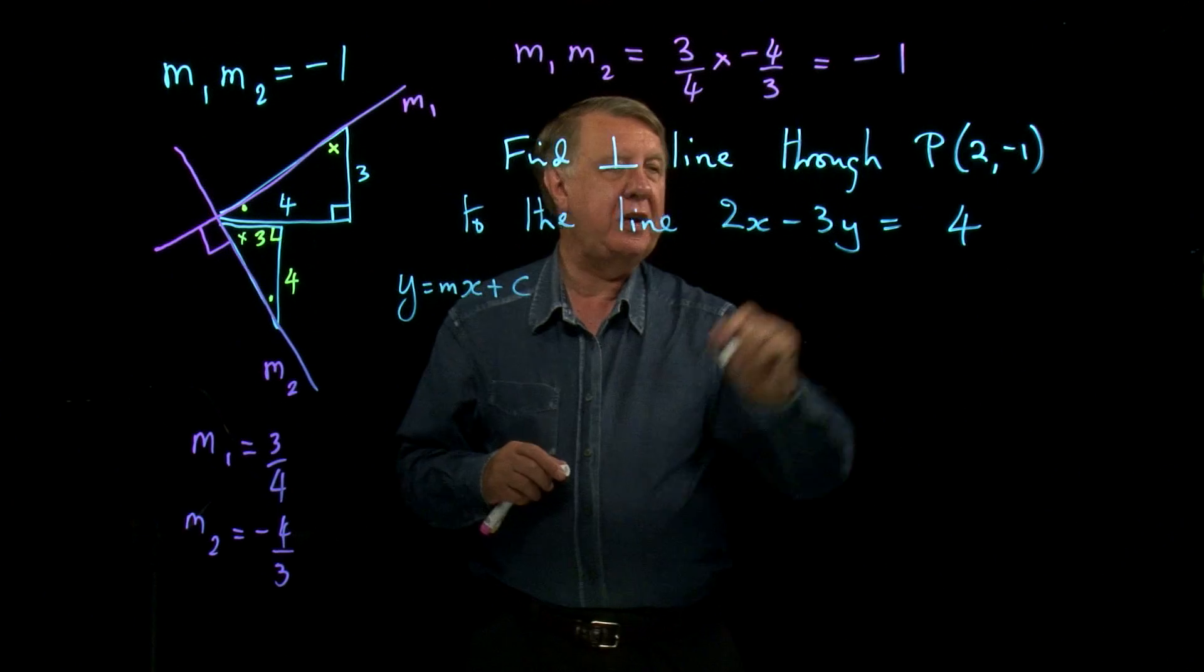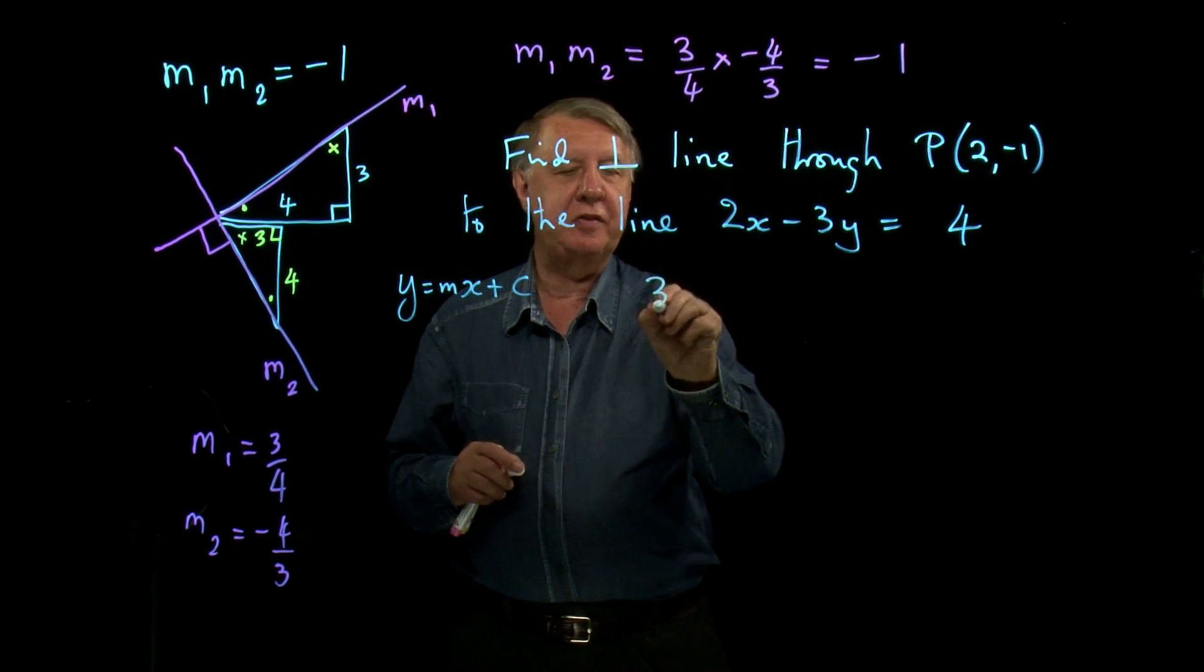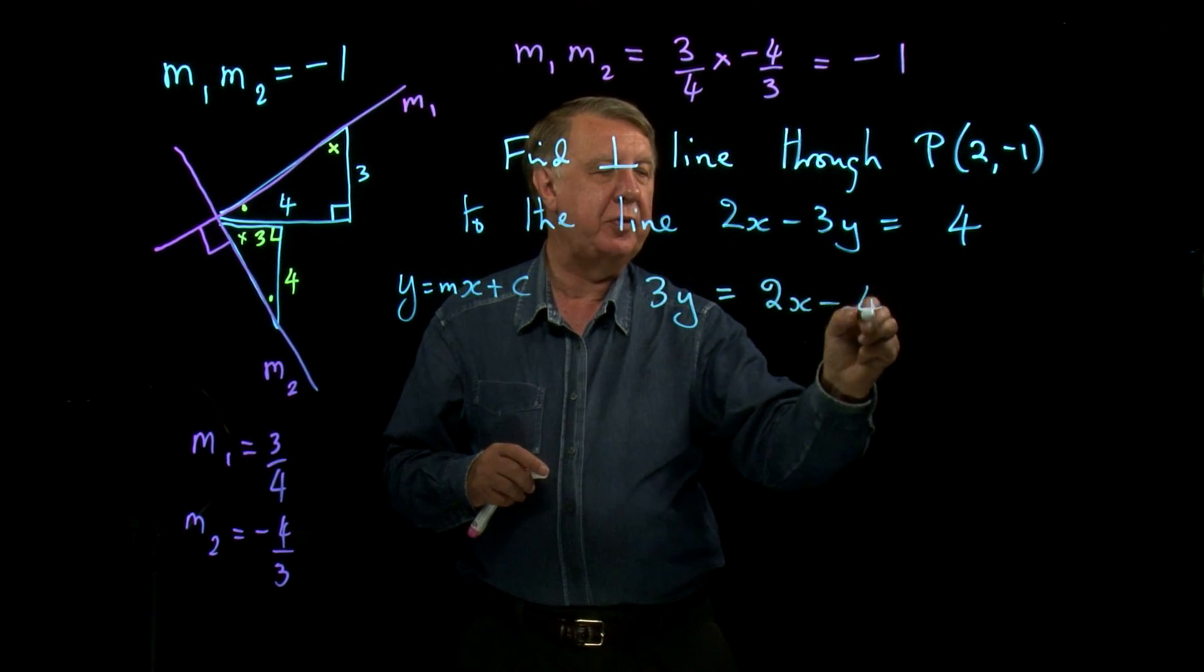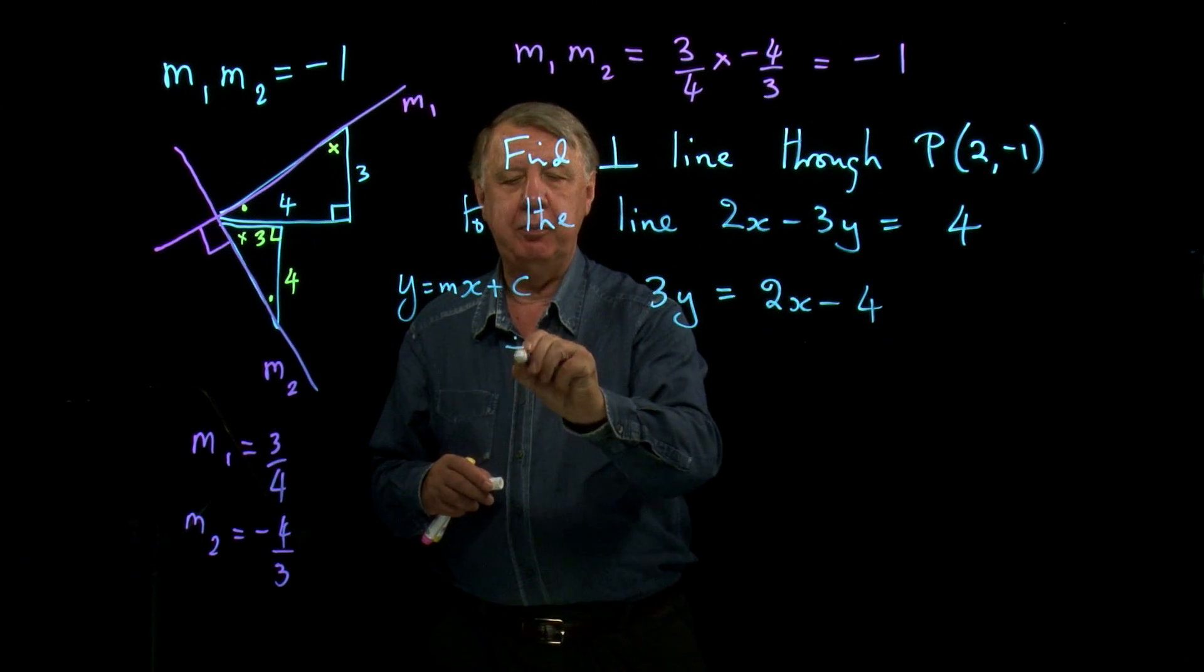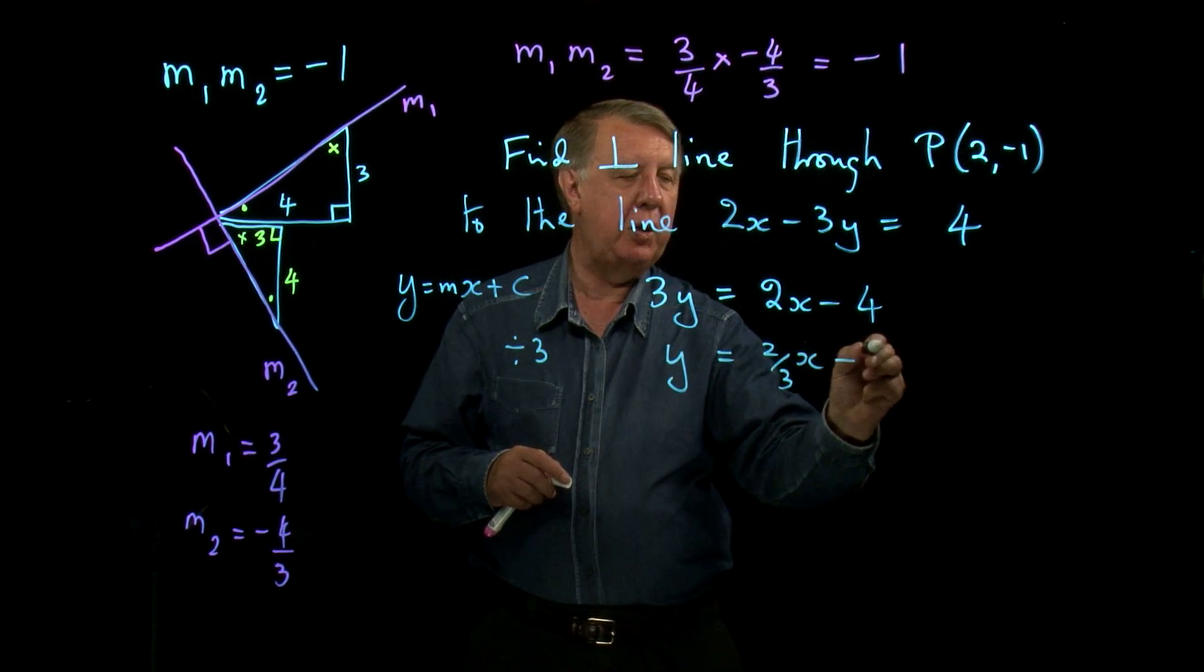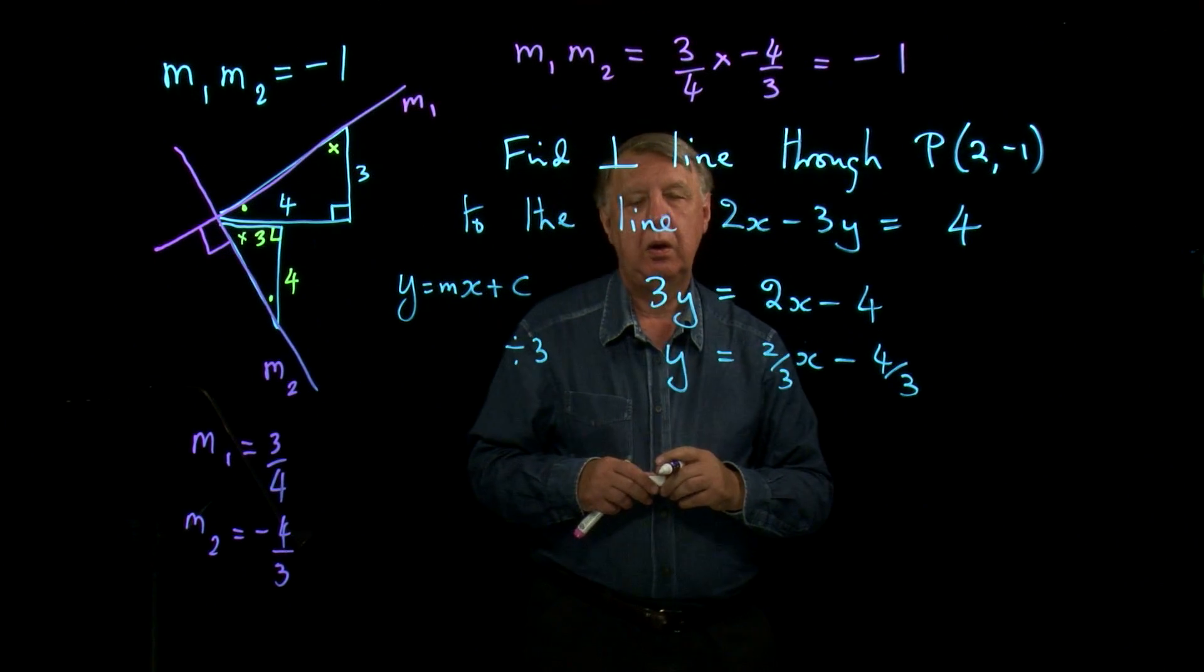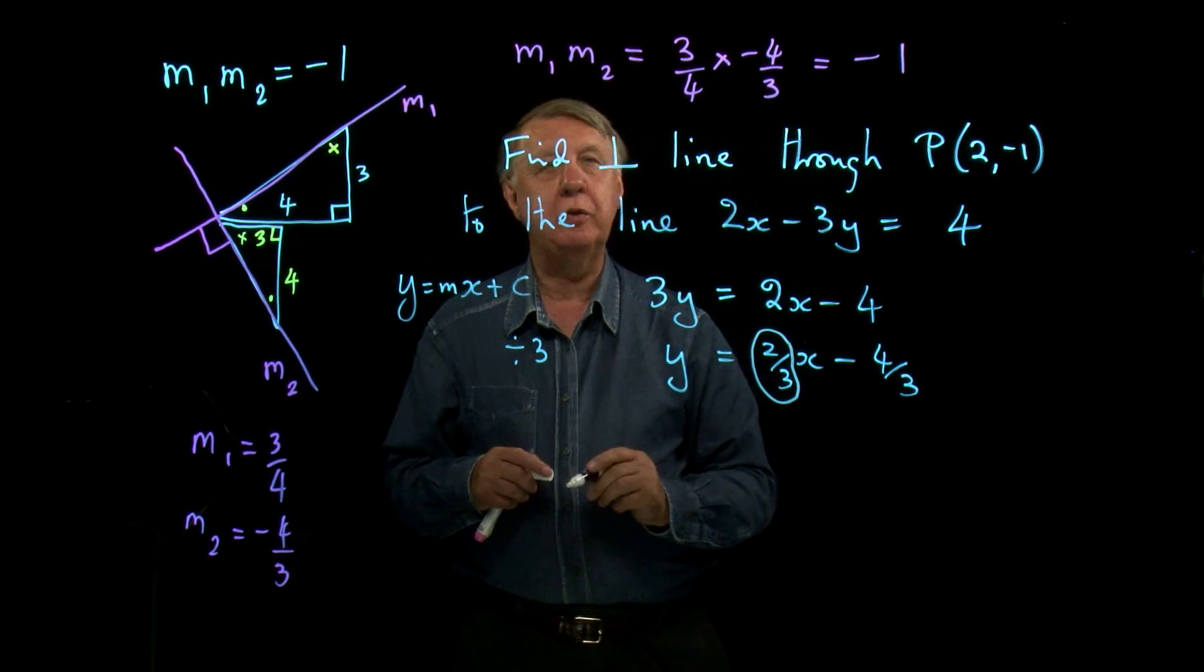So I need the 3y on one side and I'll have to move the 4 to the other. So first of all I'll write it as 3y equals 2x take away 4. Now if I divide by 3, I get y equals 2 thirds x minus 4 thirds.